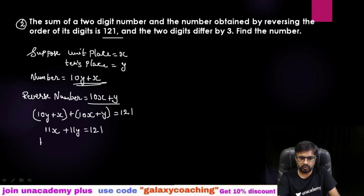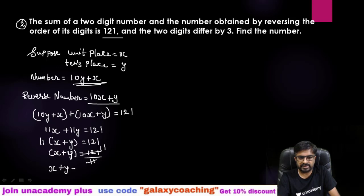Take out 11 common, x + y here. 121, so you can take this 11 in the denominator because it is in multiplication. So 11 times 11 is 121. So first equation is x + y equals 11. You got first equation from this.